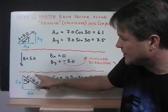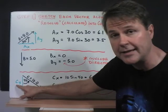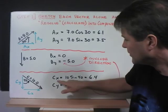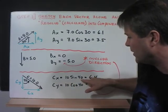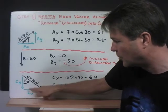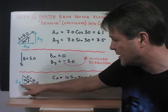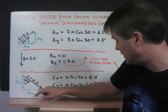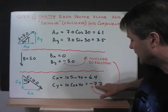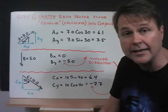So C places us in the fourth quadrant. That means that CY is going to be a negative number and CX will end up being positive. So CX is 10 sine 40. X is sine because the X component is opposite the angle. And CY is cosine because CY is adjacent to the angle. And we have these two values. And we put in the negative in front of 7.7 because CY is in the negative direction.